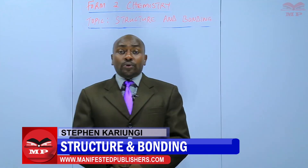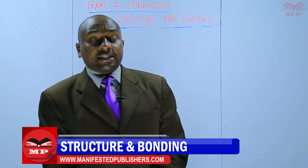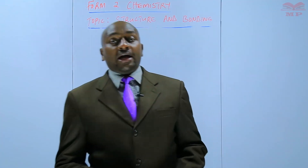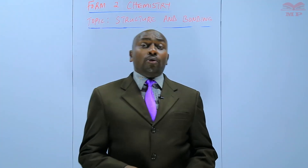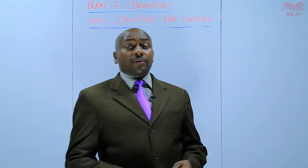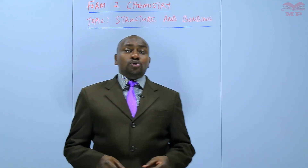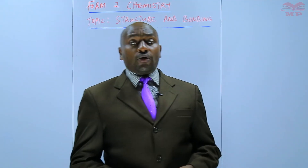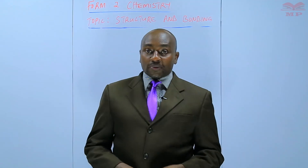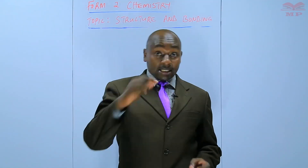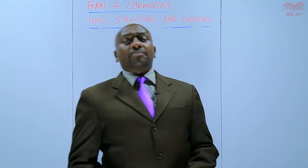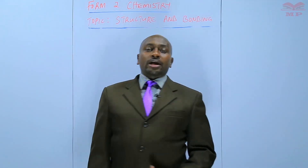Within the topic, we have learned that we have mainly three types of bonds: ionic bond, covalent bond, and metallic bond. We've also gone ahead to look at the properties of ionic compounds — those compounds that have ionic structure, such as sodium chloride, magnesium chloride, and others.